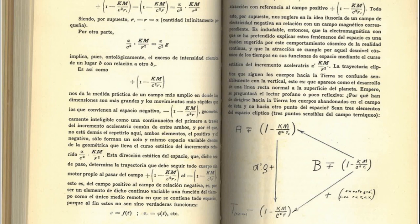It implies, therefore, ontologically the excess of cosmic intensity of a place B in relation to another B. That is how negative KM divided by C square B comma gives us the practical measure of a broader field where the dimensions are larger and movements faster than those appropriate to negative space.